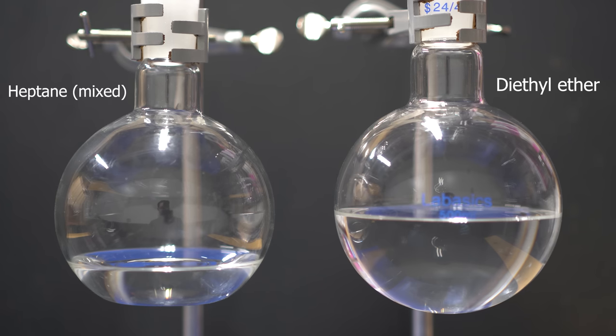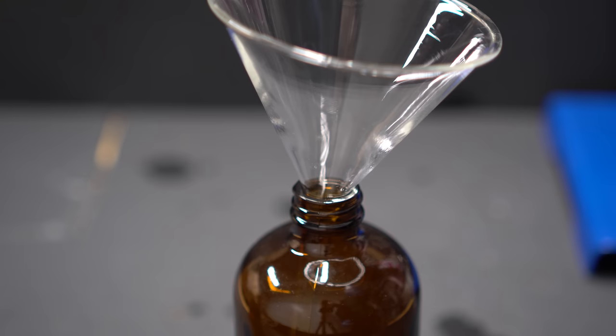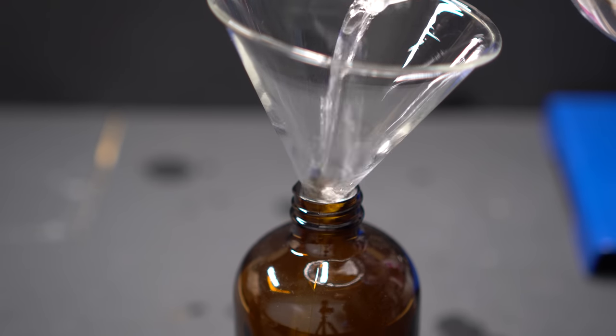From the two cans of the starting fluid you can see that we actually got a pretty good amount of heptane and diethyl ether. On the right is our diethyl ether and on the left is our heptane.